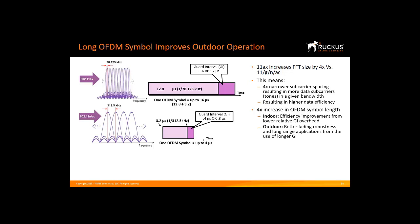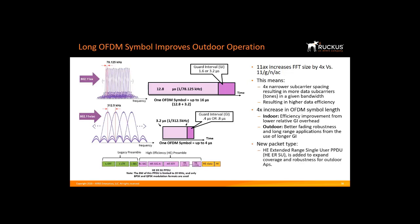And for outdoor, the long OFDM symbol of 12.8 microseconds, combined with a 3.2 microsecond guard interval, addresses the long delay spread in an outdoor environment due to multipath reflections, allowing more robust outdoor operation. The outdoor operation is handled by using a new extended range single-user packet type.